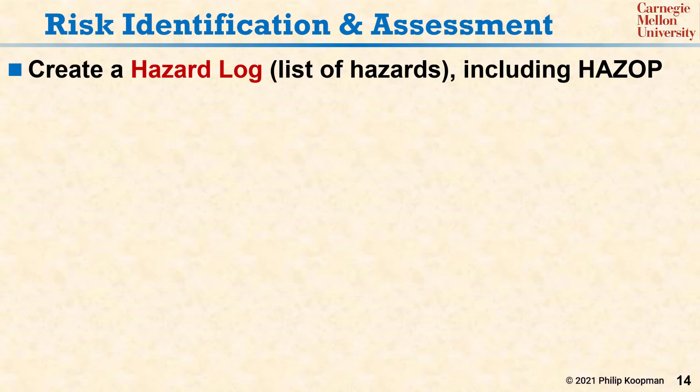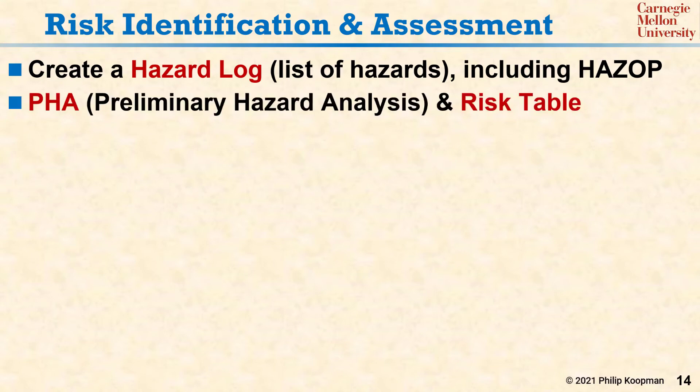Once the list of hazards has been collected, a preliminary hazard analysis, or PHA, is performed. This usually involves using a risk table.